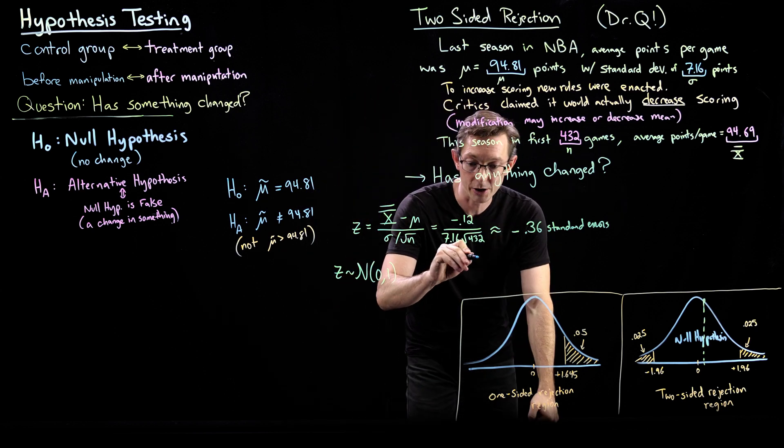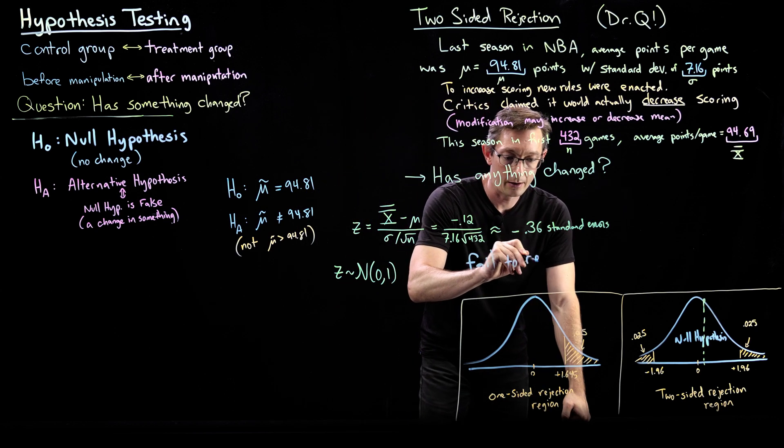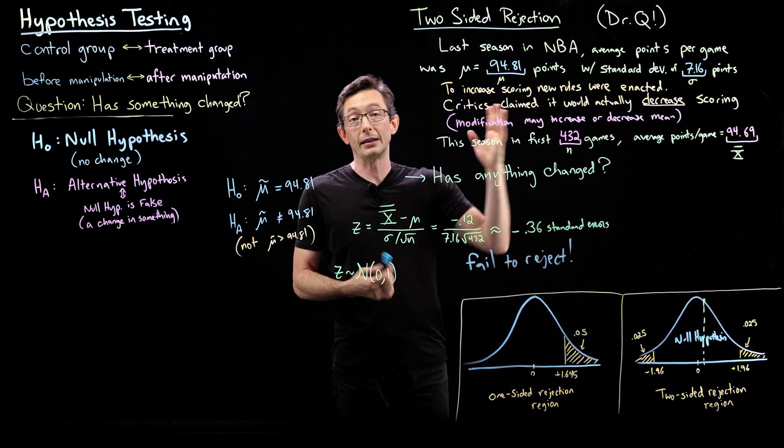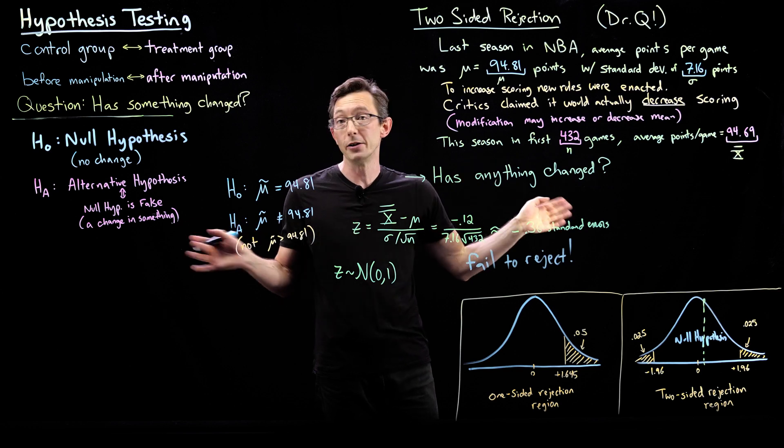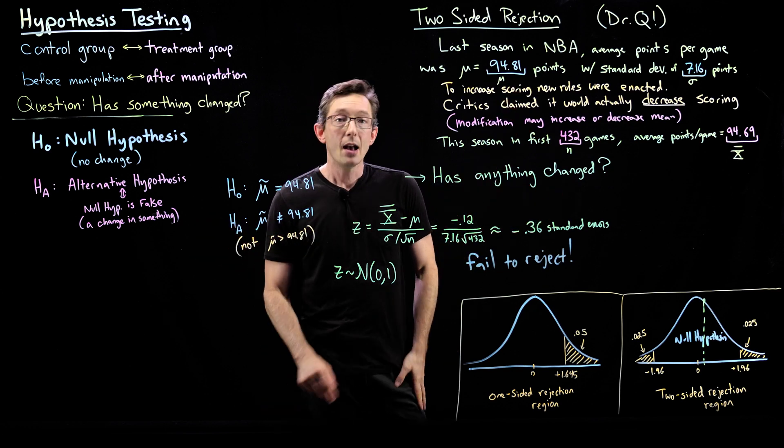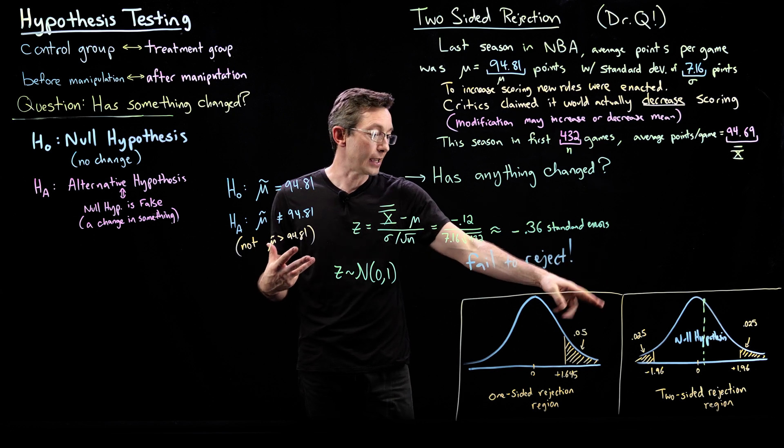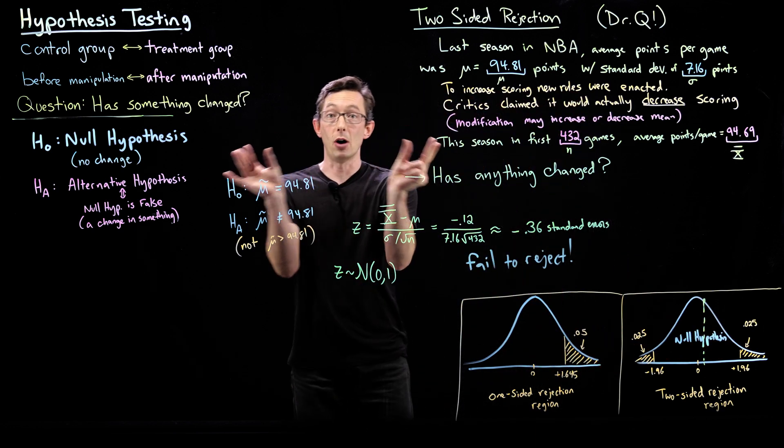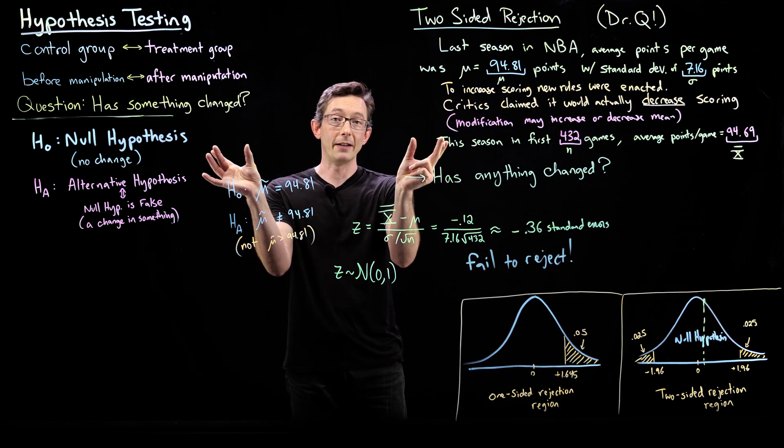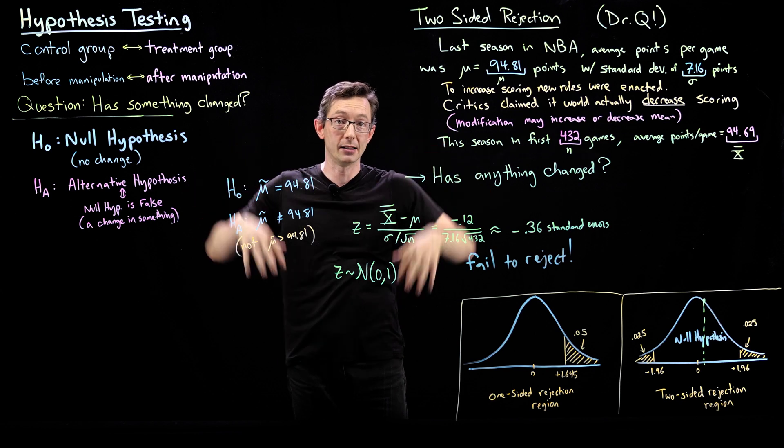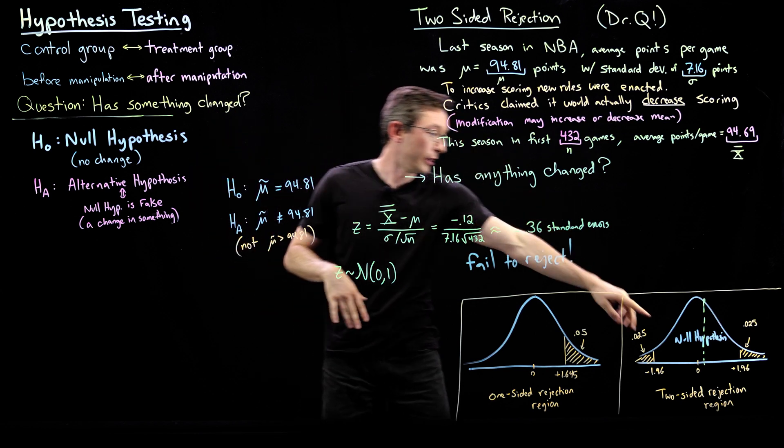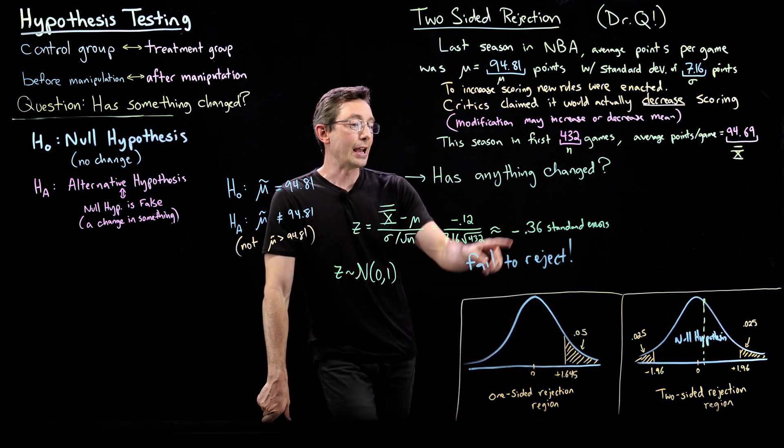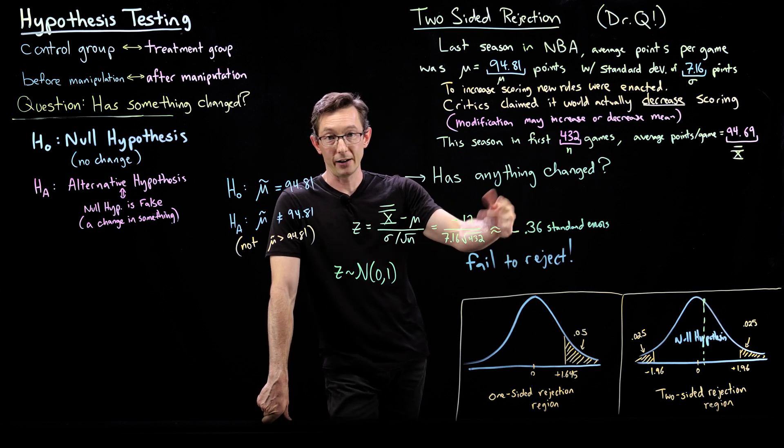I fail to reject the null hypothesis. So we fail to reject. Essentially what that means is we really can't say, we don't think that this modification increased or decreased the scoring. We think it had no effect at all. These rules didn't change scoring. That's an example of how you would do a two-sided rejection region test. Your rejection region gets a little smaller because there's two rejection regions. For 5%, you need each of them to have 2.5%, which pushes them a little farther, 1.96 standard errors instead of 1.645 for a one-sided test. This Z value of negative 0.36,